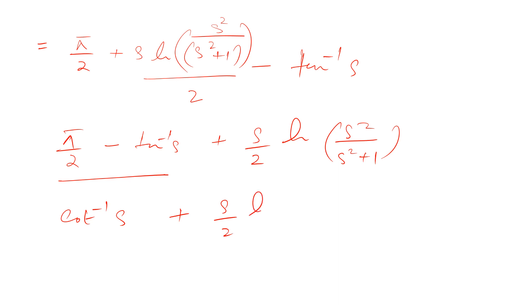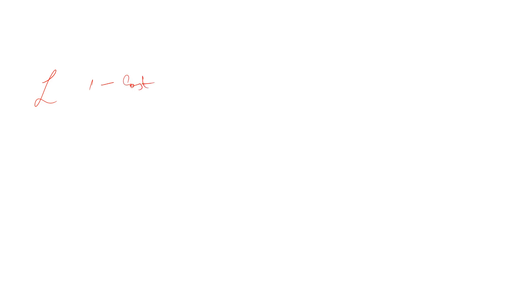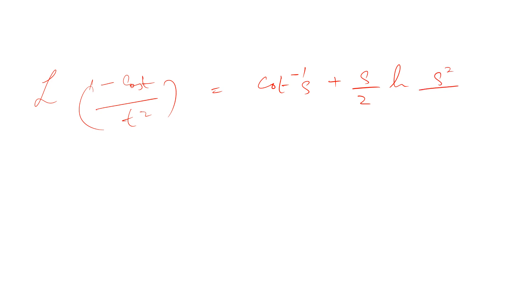Now, π/2 - tan⁻¹(s) is equal to cot⁻¹(s). So we find that the Laplace transform of (1 - cos t) / t² is equal to cot⁻¹(s) + (s/2)·ln(s² / (s² + 1)). This is our final answer. That's all for now, thanks.